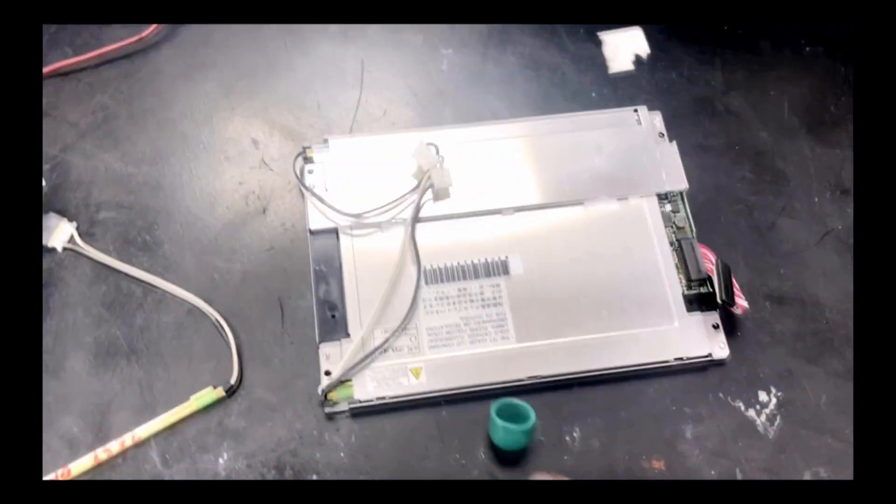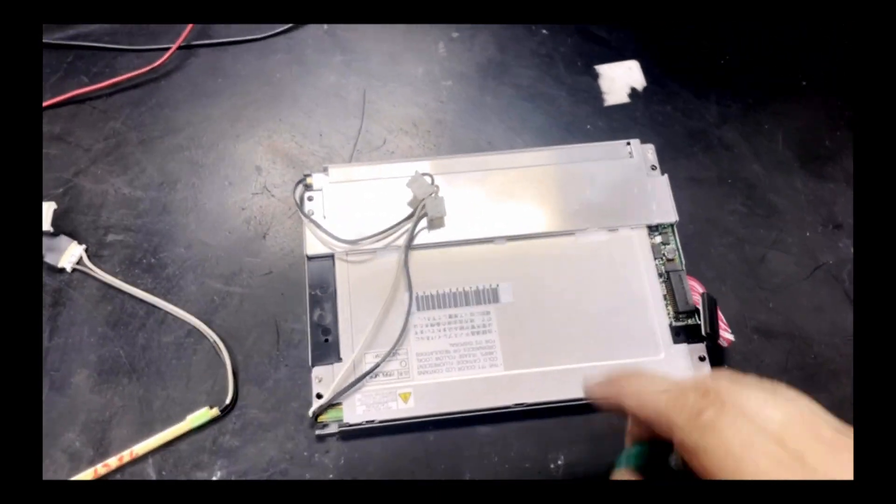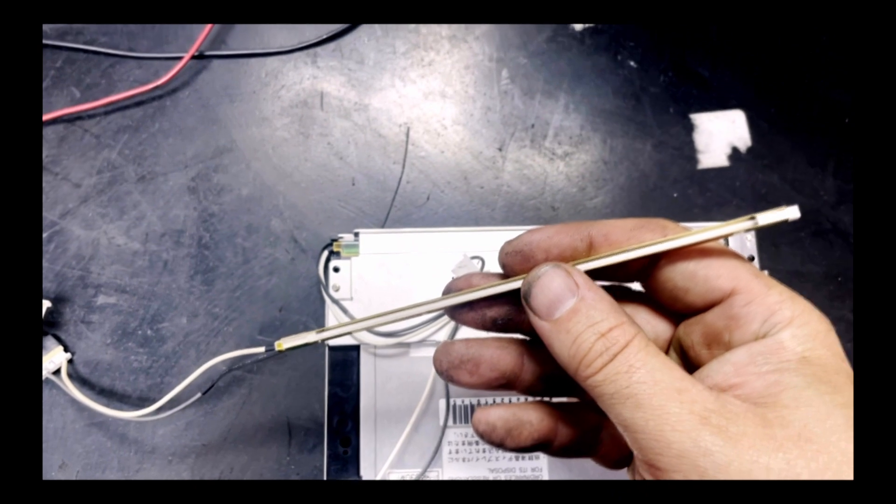So these bulbs would be inside a housing and that housing would look something like this. You can see the CFL bulb there.